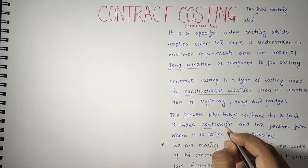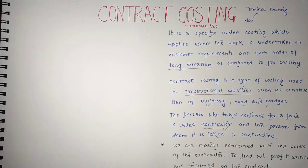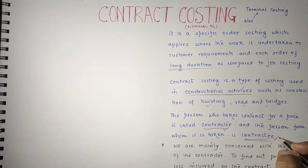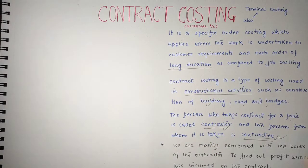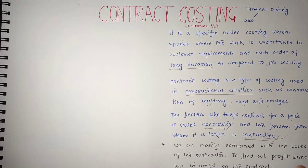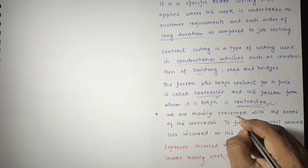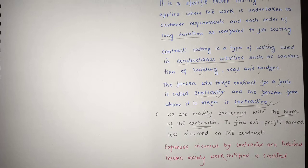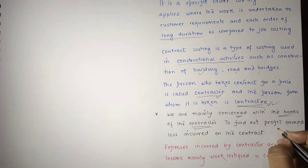The terminology here is: the contractor is the person who takes the contract for a price, and the contractee is the person from whom the contract is taken. Without these two parties, it cannot be a contract — one who gives the contract and one who takes the contract. In contract costing, we are mainly concerned with the books of the contractor.